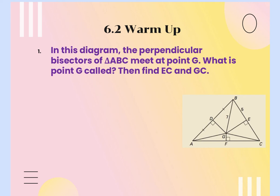Yesterday we learned about the point of concurrency of perpendicular bisectors — where it's located and the theorem attached to it. Then we learned about the point of concurrency of angle bisectors: the name, the location, and the theorem attached to it.